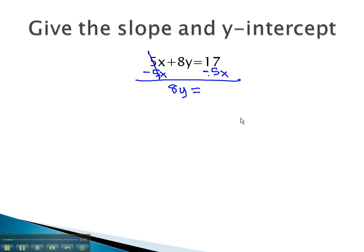On the right, it's important to note that these are not like terms and cannot be combined. We will put the term with x first to match the slope-intercept equation, negative 5x plus 17.